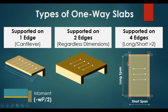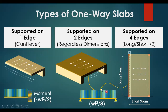For a simply supported span under uniform load, the maximum moment will be WL squared over eight. However, for the case of a cantilever it is minus WL squared over two.